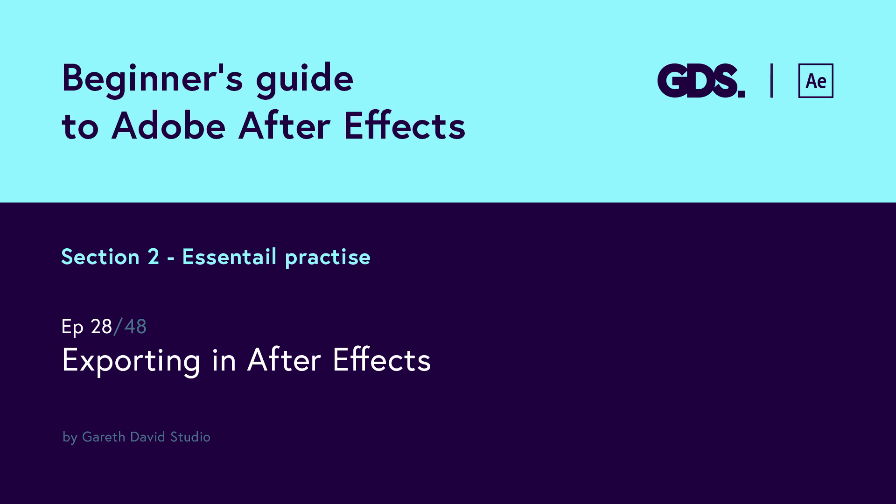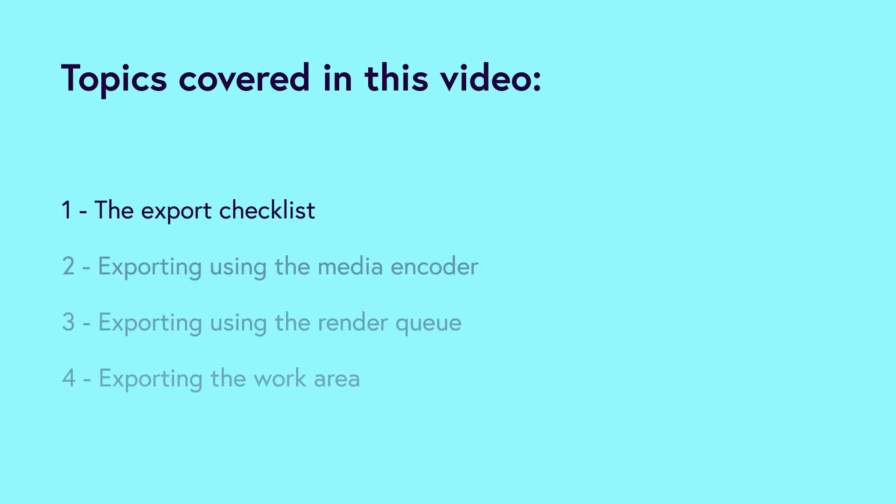Hello and welcome to the 28th video in this beginner's guide to Adobe After Effects. In this tutorial we are going to look at how we can export our projects from After Effects. We will be covering the following topics: the export checklist, exporting using the Media Encoder, exporting using the Render Queue, and exporting the work area.